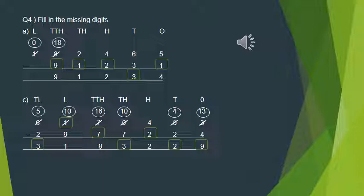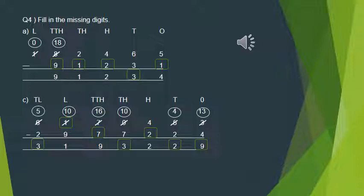For Part C, at the ones place, 3 minus 4 is not possible, so we make it 13. 13 minus 4 is 9, so the missing digit is 9. Since we borrowed, the tens digit above 5 becomes 4; 4 minus 2 is 2. At the hundreds place, no borrowing occurred, so 4 minus 2 is 2; the missing digit is 2.